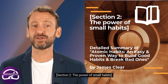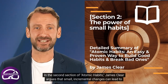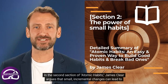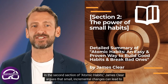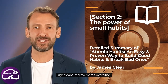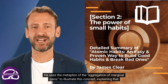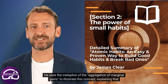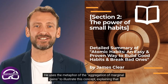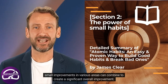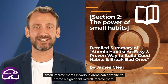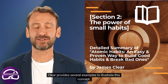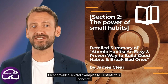In the second section of Atomic Habits, James Clear argues that small, incremental changes can lead to significant improvements over time. He uses the metaphor of the aggregation of marginal gains to illustrate this concept, explaining that small improvements in various areas can combine to create a significant overall improvement.